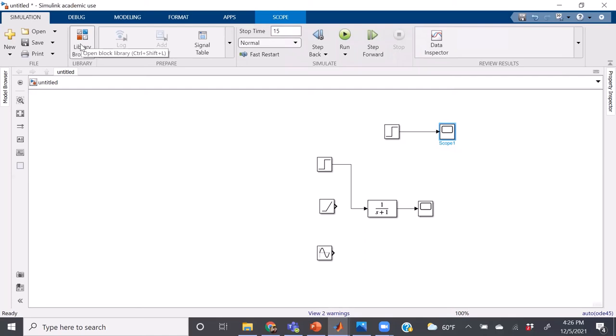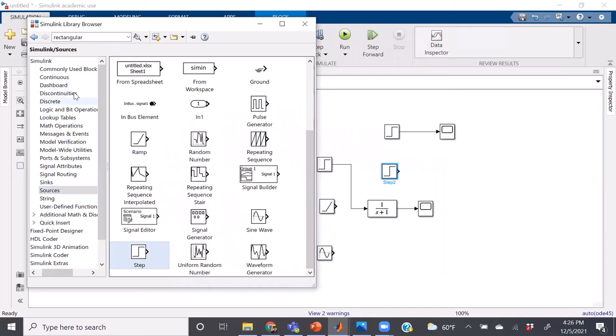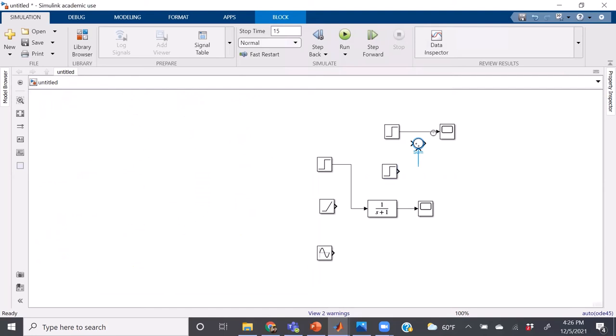We need to go back to sources, add another step change, and we will also need to add in a math operator. We'll need to add in the sum. And we'll take this arrow, put it on this side, and then this arrow on this side.